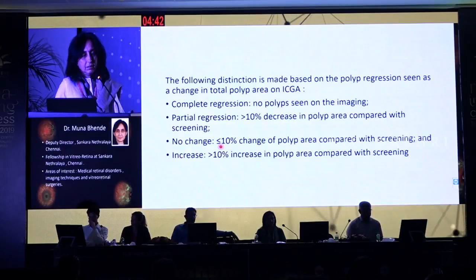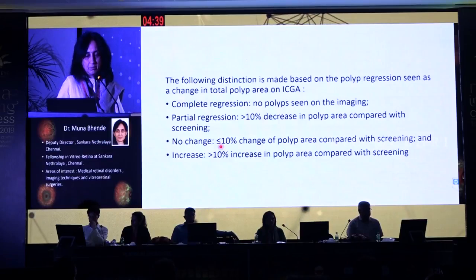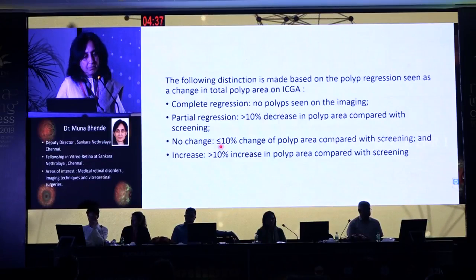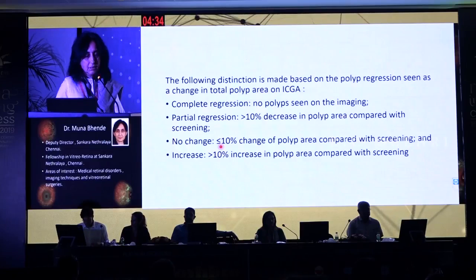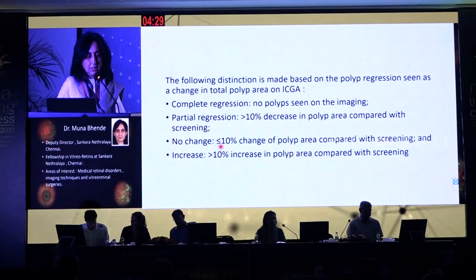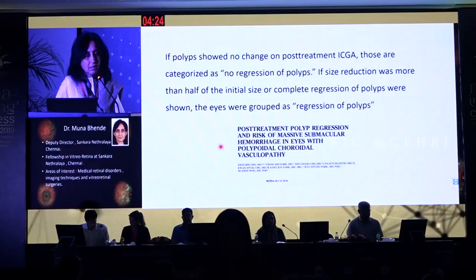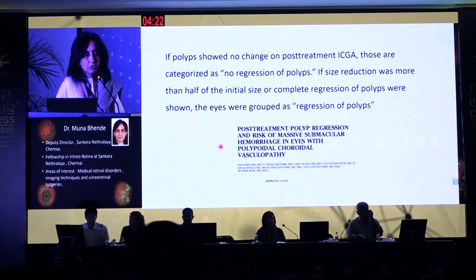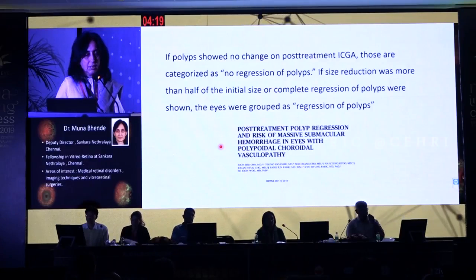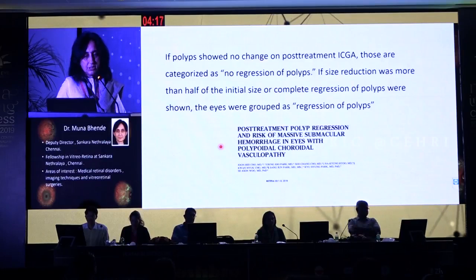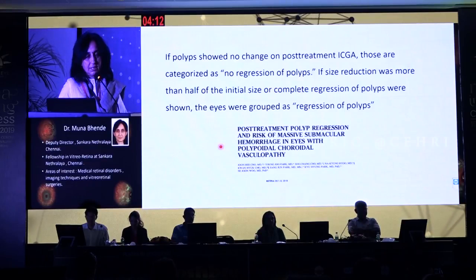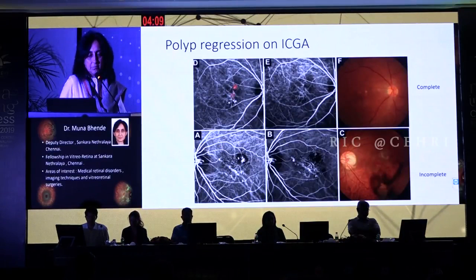How do we distinctly differentiate based on polyp regression? If you have complete regression, there are no polyps seen on imaging. If you have partial regression, there is more than 10% decrease. No change means less than 10% change, and increase means more than 10%. A subsequent study showed that if polyps showed no change post-treatment, it was characterized as no regression, and if size reduction was more than half, it was grouped as regression. All these are ICG angiographic findings.